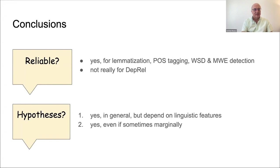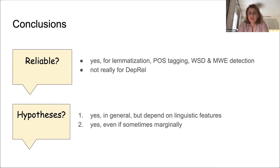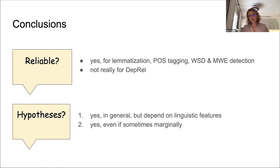To conclude: whether we consider automatic annotation reliable — yes, for lemmatization, part-of-speech tagging, word sense disambiguation, and multi-word expression detection it was good, but not as good for dependency relations. As for our hypotheses, yes, in general it performs better for mother tongue, though not as much worse for second language data as we had feared. And normalization does improve performance, even though sometimes only marginally. Thank you.